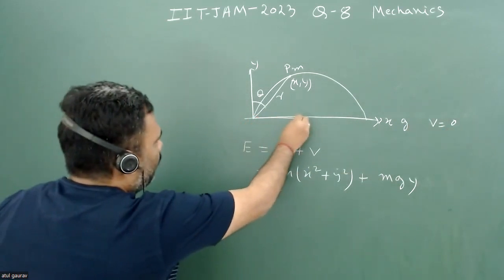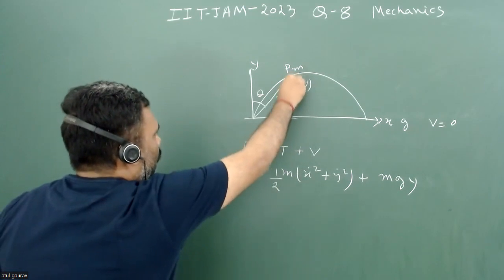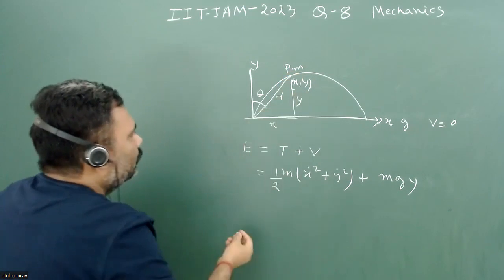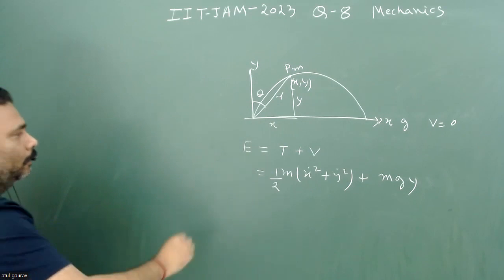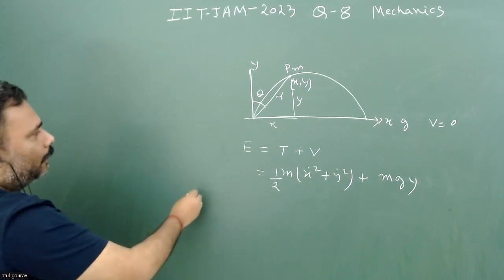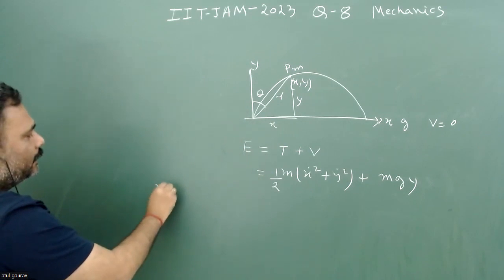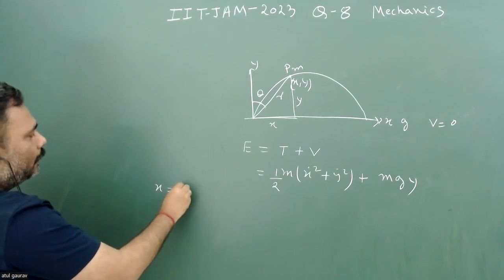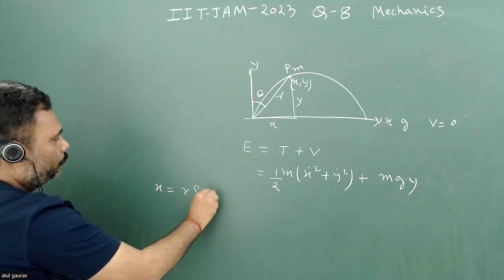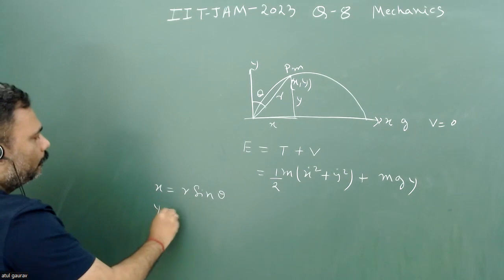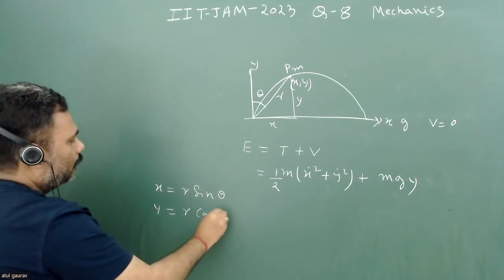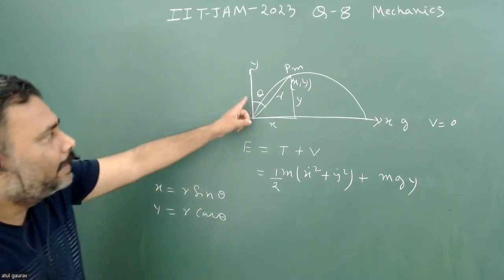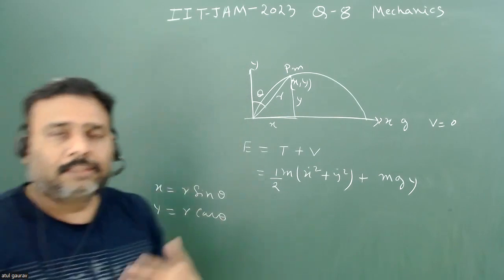So now what we can do, this is my X coordinate and this is my Y distance. We can easily transform the coordinate and X is nothing but R sine theta, and Y is nothing but R cos theta, because theta is given with respect to Y axis. So this is another catch.